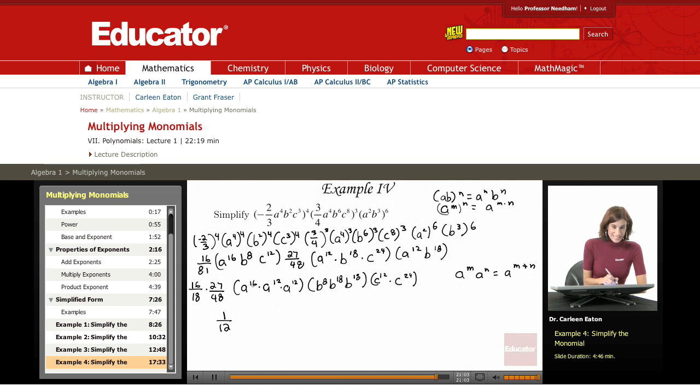Now here, I need to add 16, 12, and 12. So that's 24 plus 16 is going to give me a to the 40th. Here I have 8 plus 18 plus 18, those add up to 44. And finally, 12 plus 24 is 36.